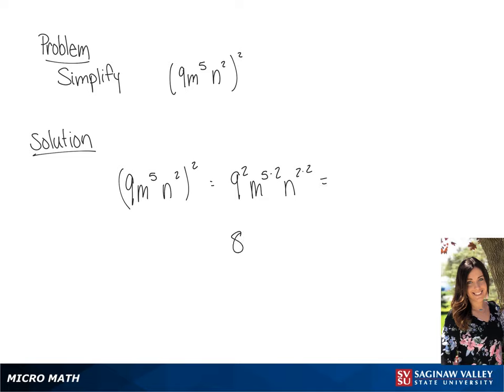So if we simplify it, we get 81m to the tenth power n to the fourth power.